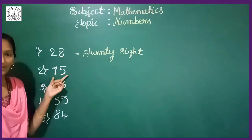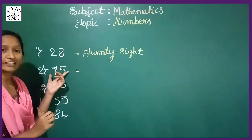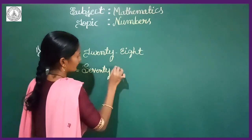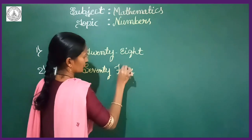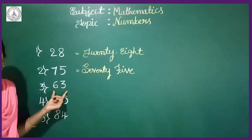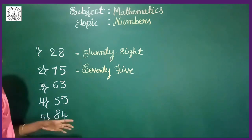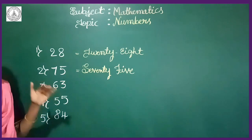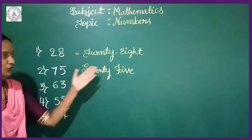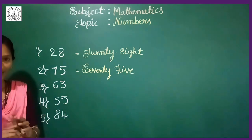Come to the second one — it is 75. First I write down seventy, then five, so it is seventy-five. The next is 63, then 55, and the last one is 84. I showed the first two number names. In the same way, you have to write down the remaining three number names as shown above. These things you also learnt in class one.